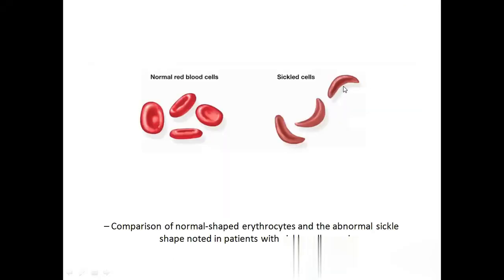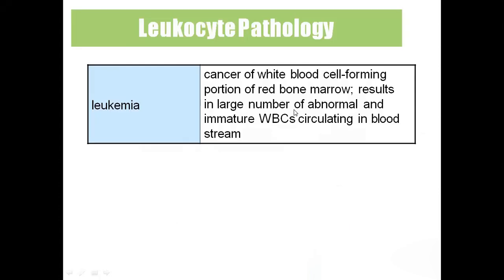This picture shows a normal biconcave RBC next to a sickle-shaped RBC. The normal RBC lives 120 days, while the sickle-shaped one dies very early. Leukemia is white blood cell cancer — also called blood cancer. It is cancer of the red bone marrow and results in a large number of abnormal WBC.